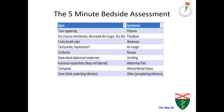When severe dehydration occurs, tachycardia and rarely hypotension can also develop. Ketone production leads to metabolic acidosis that can cause nausea, vomiting, air hunger, tachypnea, and Kussmaul respirations, as the body tries to compensate for this acidosis.